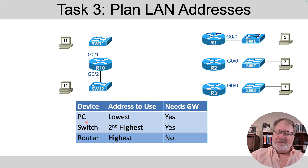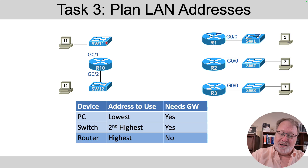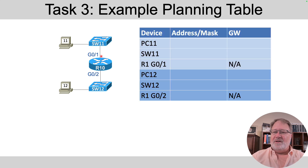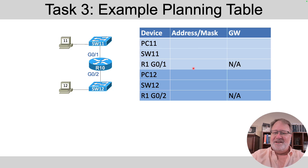In each LAN, the PCs and switches need a default gateway setting pointing to the router in that LAN. For instance, PC 11 will use Router R10's Gig0/1 IP address as its default gateway, and Switch 11 will also point to Router R10's Gig0/1 IP address as its default gateway. So plan that as well. The planning table looks something like this: PC 11 gets the lowest address in the subnet; Switch 11 gets the second highest; and Router R10's interface gets the highest address in the subnet.